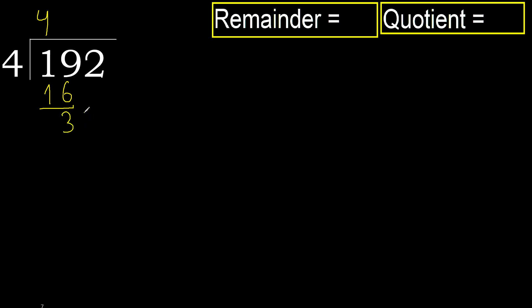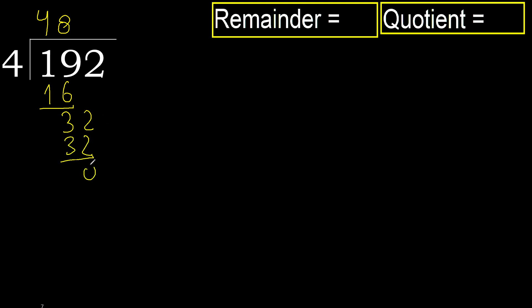Next, bring down to get 32. 4 multiplied by 8 is 32 — not greater. Subtract: remainder is 0.